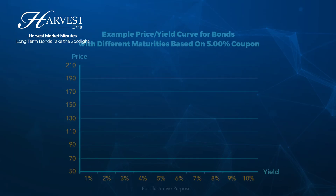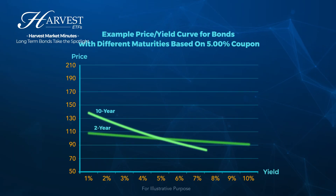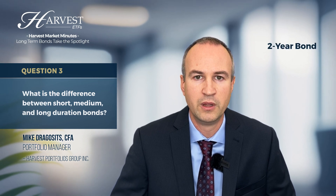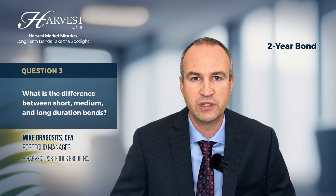But when you think about a short-term bond, the duration is going to be a lot lower. And if you think about a long-term bond, the duration is going to be a lot higher. The best way to give an example is to start with a short-term bond — a two-year bond will have a duration essentially of one.